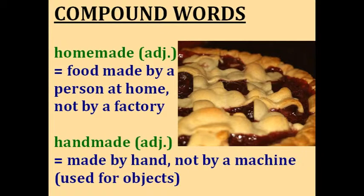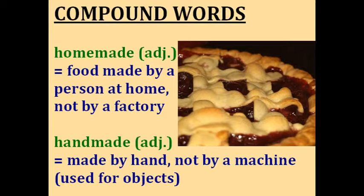How would you like some homemade cherry pie? The adjective homemade means something — usually a food — was made by a person at home and not by a factory or big company. If you buy something in the supermarket that's already prepared, it's not homemade. But if your mother makes it at home or you make it from the ingredients, then it's homemade. Similar to that is handmade, which describes something made by hand, not by a machine — for example, if you make your own clothing. The difference is that we usually use homemade for food and handmade for objects like clothing or decorative items made by hand.